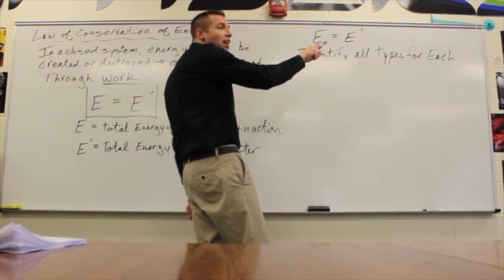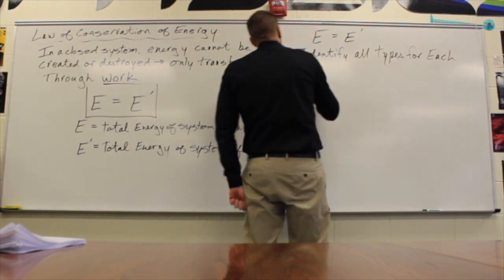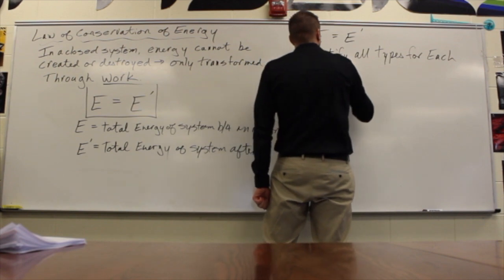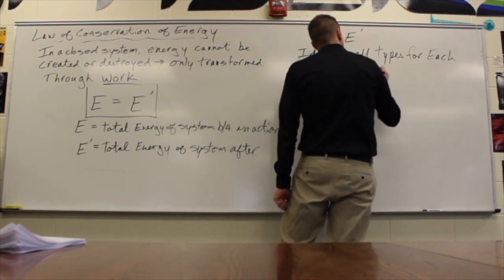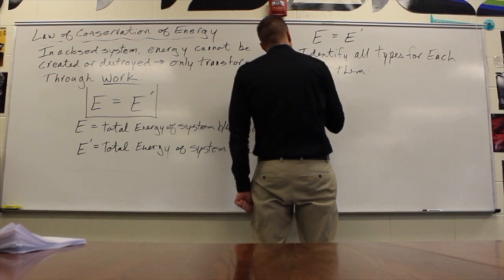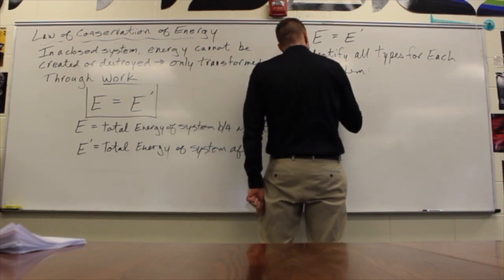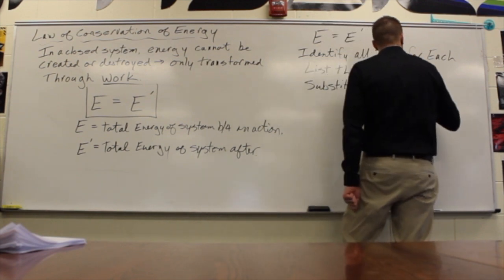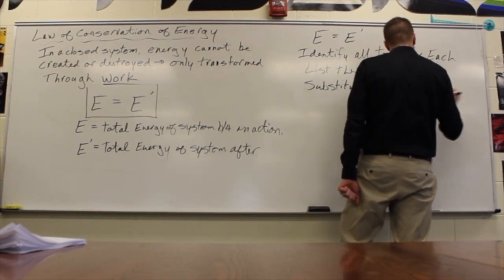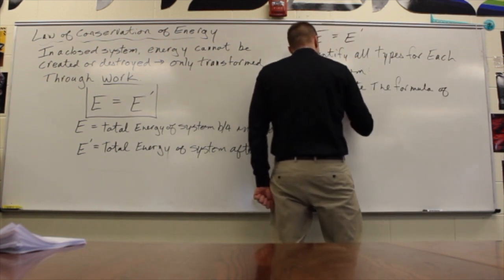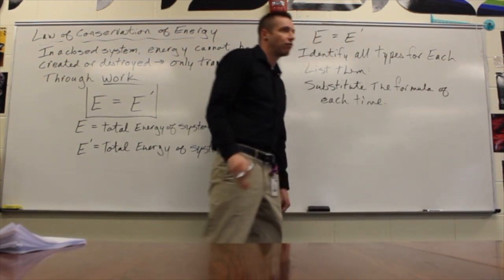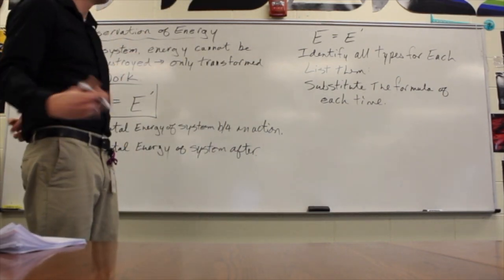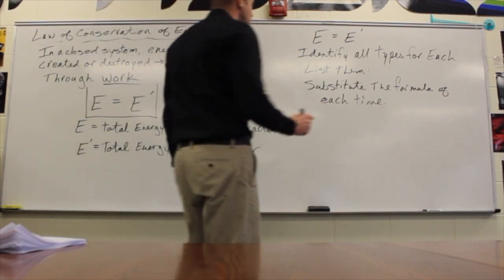So you're going to identify all the types, then list them all, and then substitute in the formula — the way to calculate the amount of energy for the various forms — and then solve for what's missing.